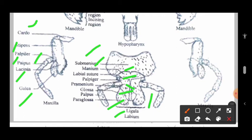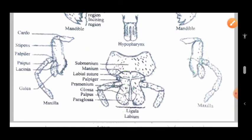There is also a second maxilla, and the hypopharynx part is also present in the insect. These are the parts of the typical insect, and their work is different — some parts help in grinding, some parts take part in engulfing. These are various functions done by various parts.